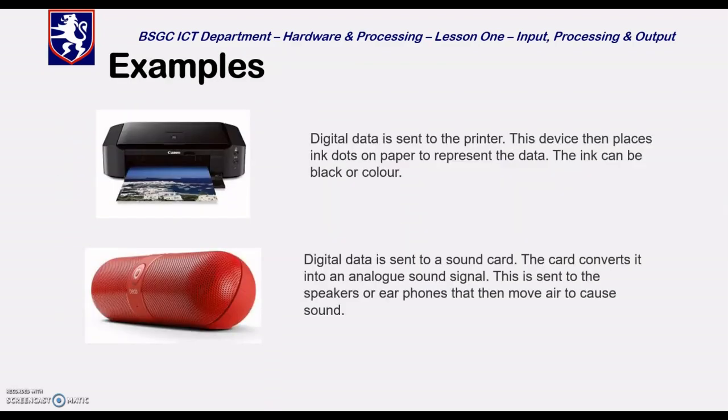What you're going to do now is we're going to look at some examples here. So here's a couple of examples. We've got a printer. So digital data is sent to the printer. The device then places ink dots on the paper to represent the data. The computer doesn't know what it is. The computer doesn't know you're printing a photo, the computer doesn't know you're printing homework. It's just printing ink dots that represent the data into something that you understand. And it's the same with speakers. The digital data is sent to the sound card. The card converts it to an analog sound signal so you understand it.